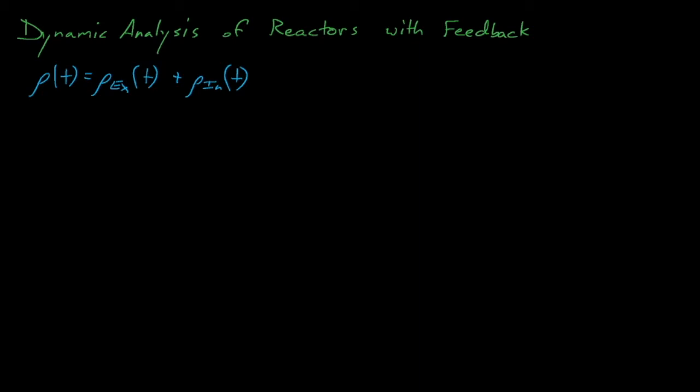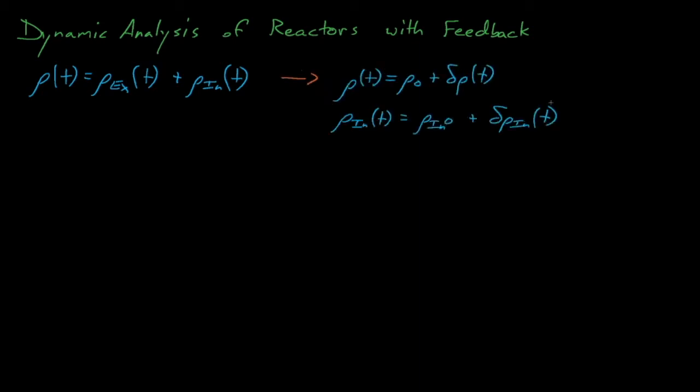In contrast to this, the internal reactivity, rho-in, includes any internal feedback effects, such as a negative reactivity insertion from a decrease in moderator density, or from Doppler broadening into fuel as its temperature increases. As before with our other variables, we'll assume that our reactivities are equal to some initial reactivity, rho-naught, plus some time-dependent delta-rho term. Because reactors are generally assumed to be in a steady-state configuration at the start of transients, these rho-naught terms are generally equal to zero.